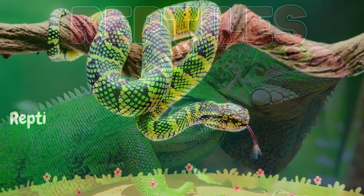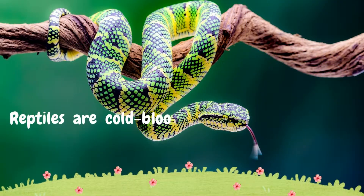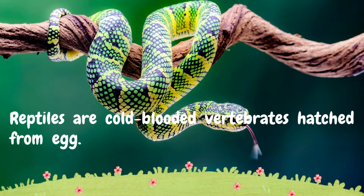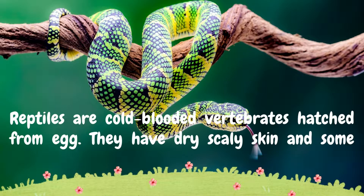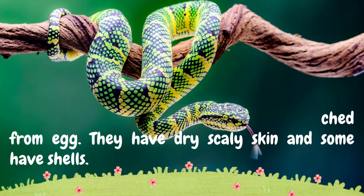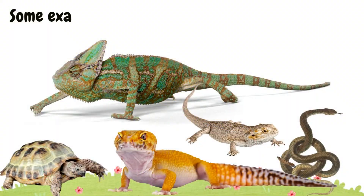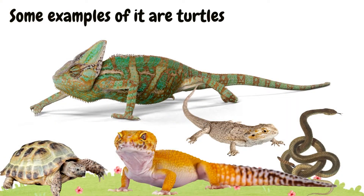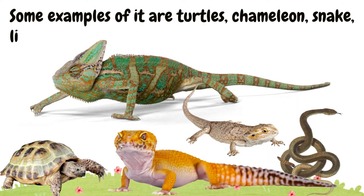5. Reptiles. Reptiles are cold-blooded vertebrates hatched from eggs. They have dry scaly skin and some have shells. Some examples are turtles, chameleon, snake, lizard, and gecko.